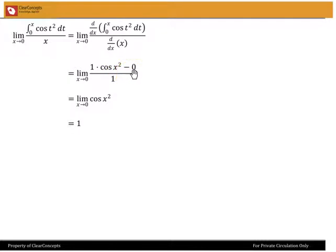Now, the derivative of the lower limit is a constant, so that becomes 0. The denominator is straightforward. Derivative of x with respect to x is 1. And so, we just now have to evaluate limit x tend to 0 of cos x squared and that is trivial. It is 1.